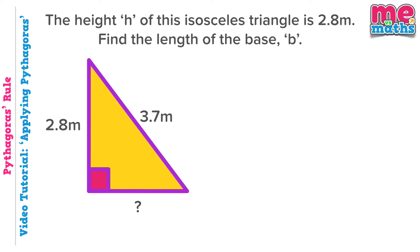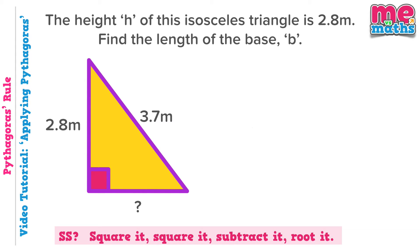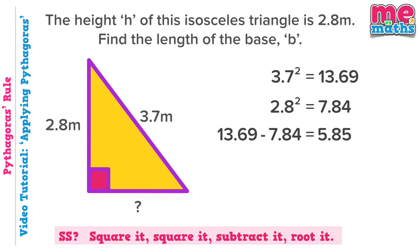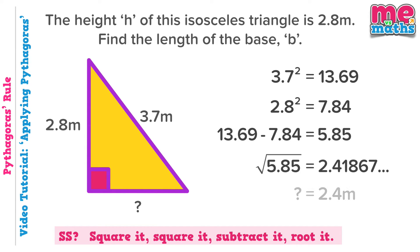Step one: check if we're looking for the hypotenuse. 3.7 metres is the longest side, the one opposite the right angle, so we're actually looking for one of the shorter sides because we're trying to find the length at the bottom which is part of the base. The rule we want is: to find a short side — square it, square it, subtract it, root it. So square both the sides we've been given, subtract as we're looking for a short side, and square root to find our answer.